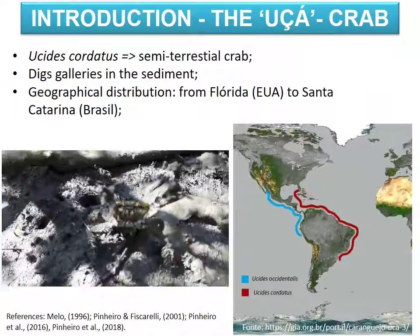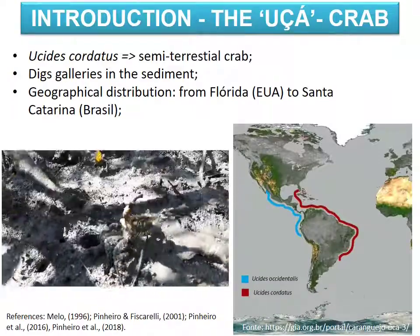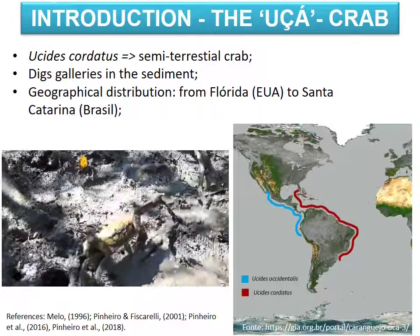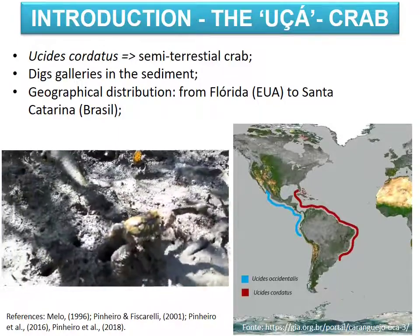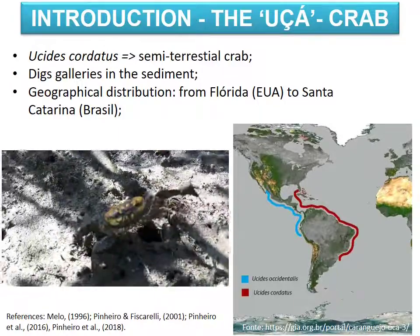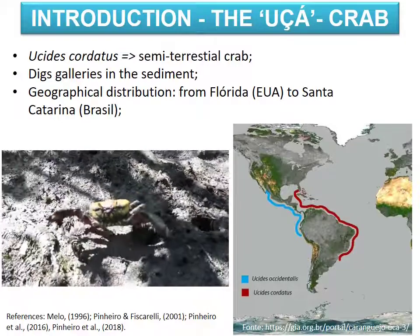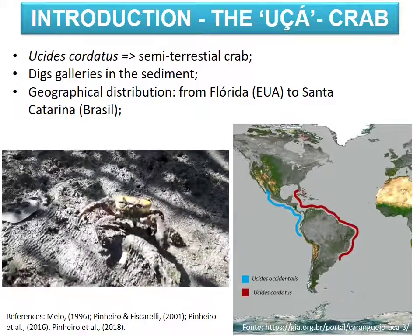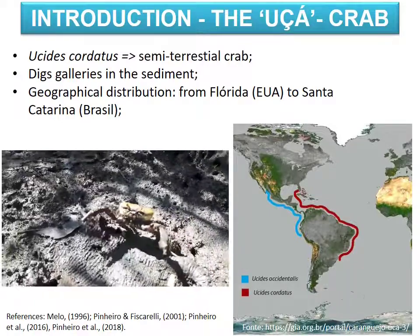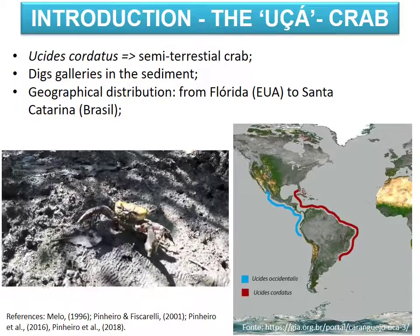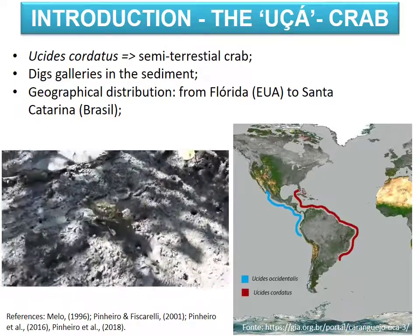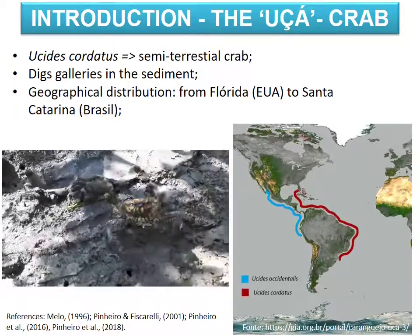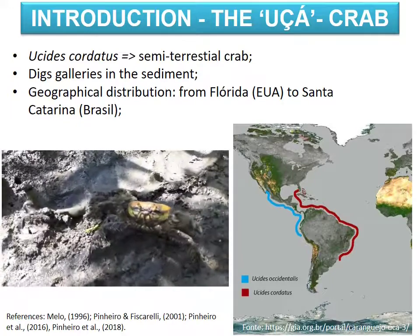Ucá crab is a semi-terrestrial crab endemic from mangrove areas, where it digs galleries in the sediments. It occurs on the western coast of the Atlantic Ocean from the state of Florida, USA, to the city of Laguna, Santa Catarina, southern Brazil.